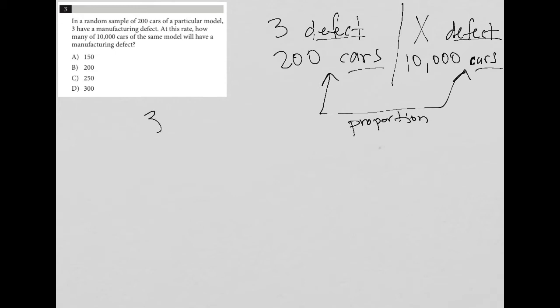So I can solve this by saying the relationship I know is 3 to 200, if I use defects as my numerator and the number of cars as my denominator. Because we want to continue at that exact same rate - the rate isn't increasing or decreasing - we're saying that this ratio, 3 to 200, should be equal to the ratio of some unknown number out of 10,000.